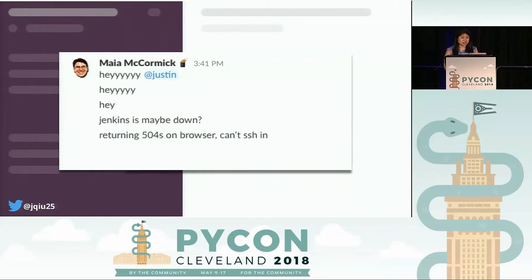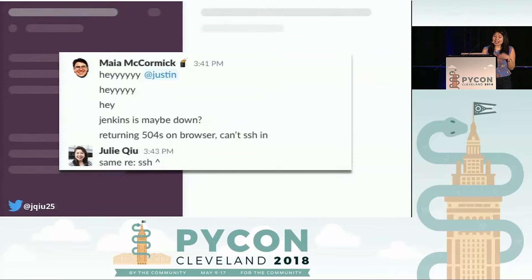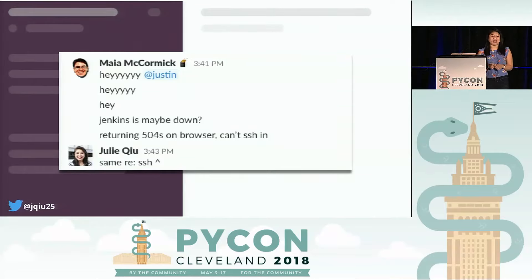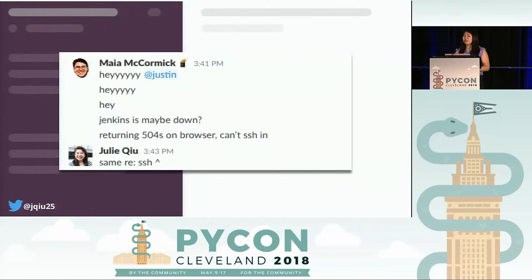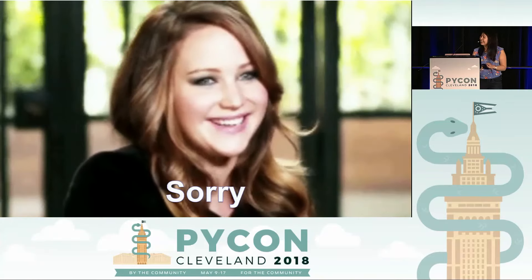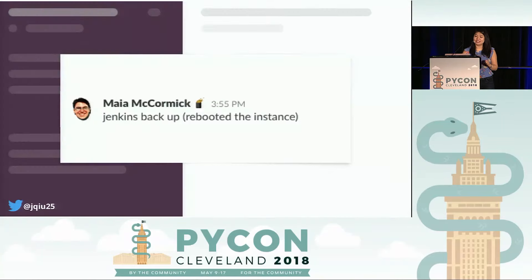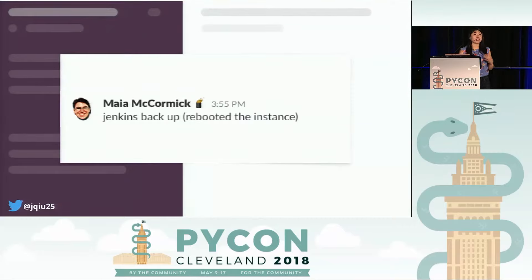I jumped in too and confirmed Jenkins was down. Then two minutes later I had a realization: I think I shut down Jenkins. My hunch was right — Jenkins was down because the script I was running was using up all the CPU on the server, and as a result none of the other engineers could deploy code. It was an easy fix though — all Maya had to do was reboot the instance to bring Jenkins back up. Running code on an existing server is still a pretty good strategy, especially if you monitor it a bit closer than I did.